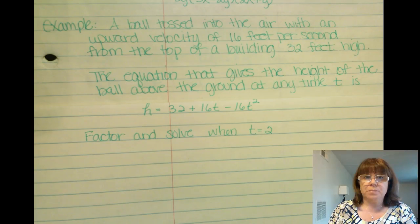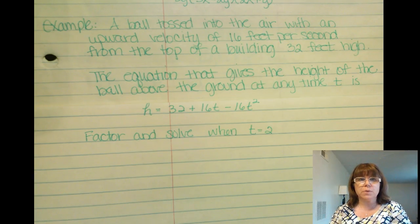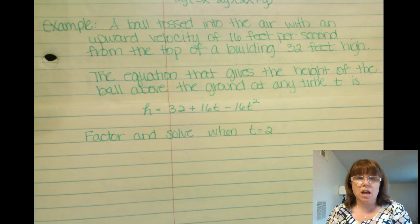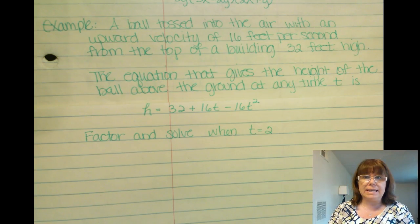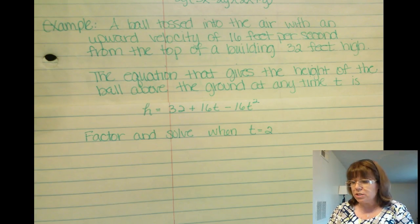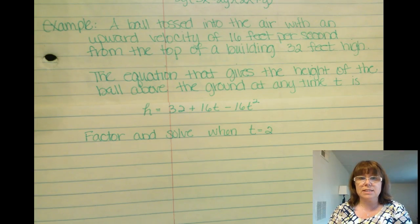Let's look at an example. A ball is tossed into the air with an upward velocity of 16 feet per second from the top of a building that is 32 feet high. The equation that gives us the height of the ball at any time in seconds t is h equals 32 plus 16t minus 16t squared.